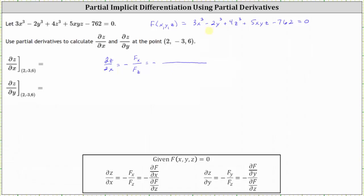The derivative of three x cubed with respect to x is nine x squared. The derivative of two y cubed with respect to x is zero, and the derivative of four z cubed with respect to x is also zero. The derivative of five xyz with respect to x gives us plus five yz, and the derivative of 762 with respect to x is zero.